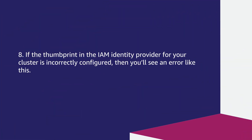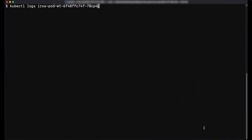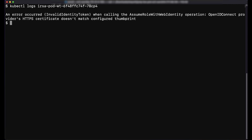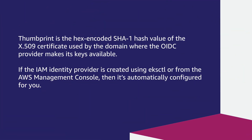If the thumbprint in the IAM identity provider for your cluster is incorrectly configured, then you'll see an error like this. The thumbprint is the hex-encoded SHA-1 hash value of the X.509 certificate used by the domain where the OIDC provider makes its keys available. If the IAM identity provider is created using eksctl or the AWS Management Console, then it's automatically configured for you.